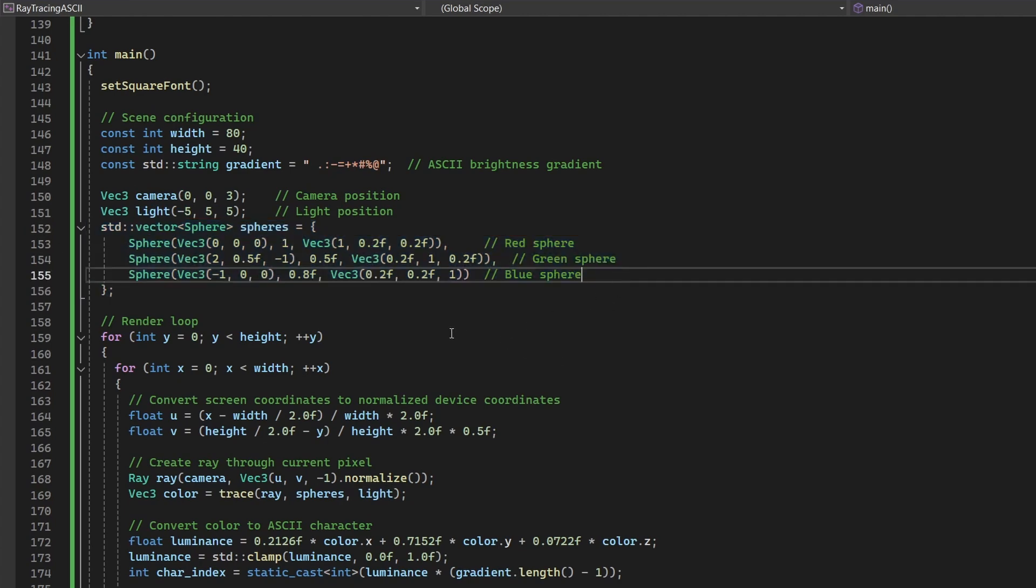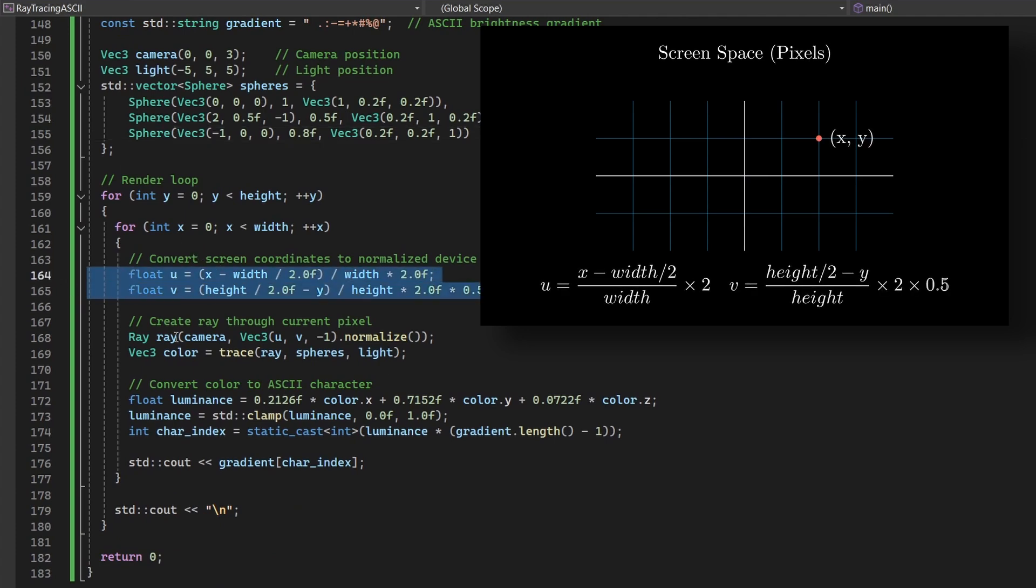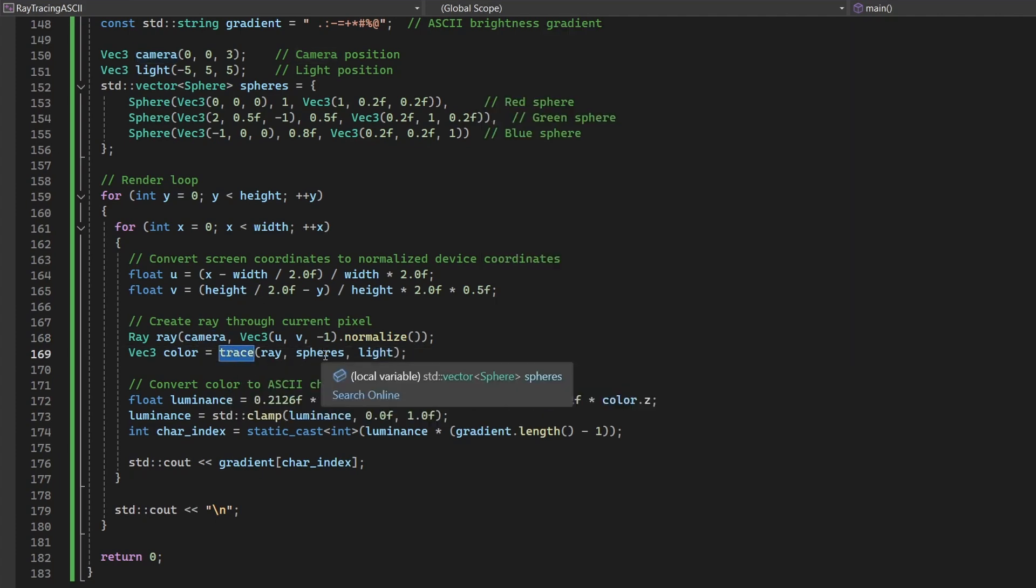A nested loop iterates over each pixel in the grid. Screen coordinates are converted into normalized device coordinates. A ray is created from the camera through that pixel. The trace function determines the color at that pixel. The luminance of this color is mapped to an ASCII character using the gradient string. Finally, each character is printed sequentially to create a complete ASCII representation of the scene.